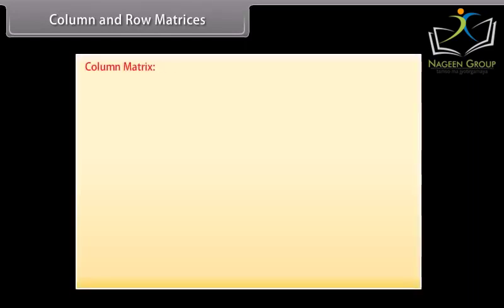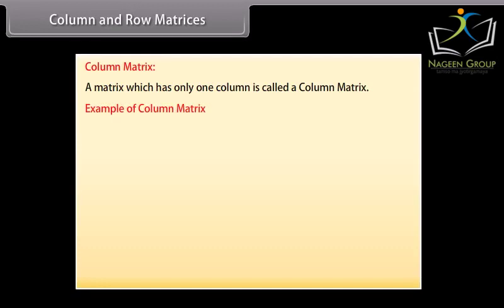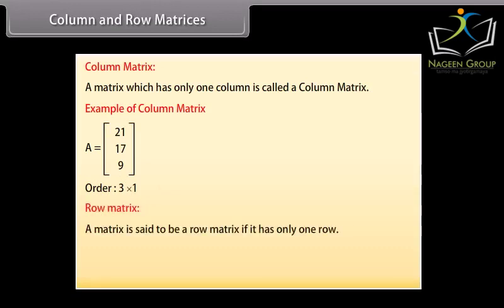Column and row matrices. Column matrix: A matrix which has only one column is called a column matrix. Example of column matrix A is equal to column wise 21, 17, 9. This matrix has three rows but only one column, so it is a column matrix. Its order is 3 by 1.